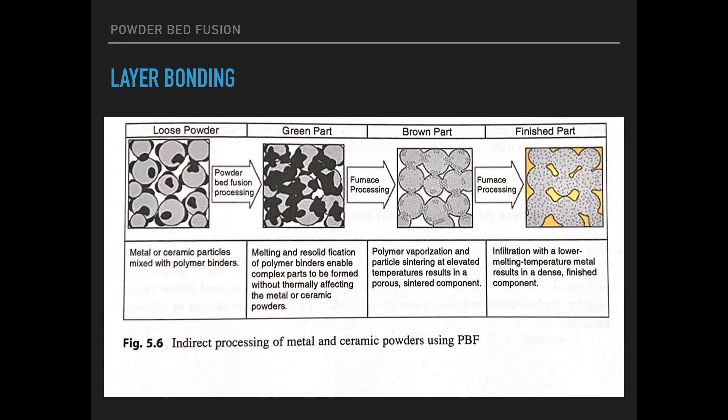In this diagram, you can see the process with an added step. So the loose powder is hit with the melting laser. The binding material melts and forms the glue holding together the green part. Then, you can sinter the material, causing the unmelted particles to bond together. Finally, you can impregnate the part with another metal in order to make it stronger and get rid of the porosity.